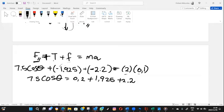This will give us, let me use my calculator quickly. 0.2 plus 1.925 plus 2.2, it will give us 4.325. Now 7.5 cos of theta is given by 4.325. Now cos of theta is given by, I'm going to divide 4.325 by 7.5.